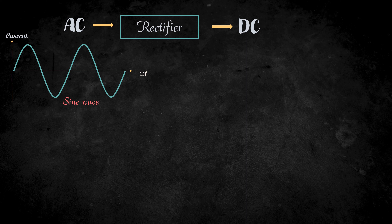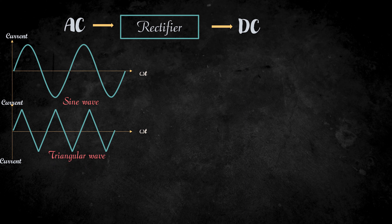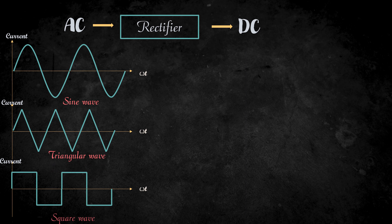The sine wave is not the only waveform of an AC signal. AC waveform can be a triangular wave or a square wave, or any wave whose magnitude oscillates periodically between positive and negative value. In AC, the voltage will also have its magnitude varying periodically between positive and negative.